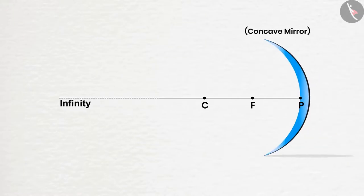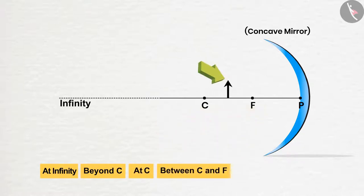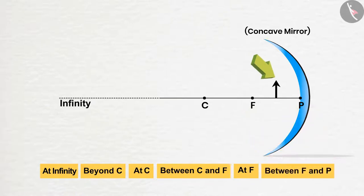As we know that in case of concave mirror, all the points lie in the front. So we can make six different cases by placing the object at six different positions: at infinity, beyond C, at C, between C and F, at F, and between F and P.